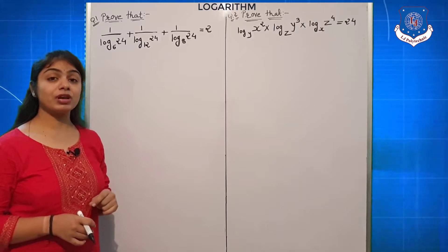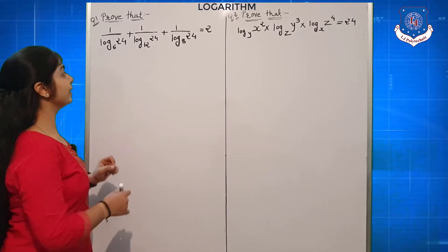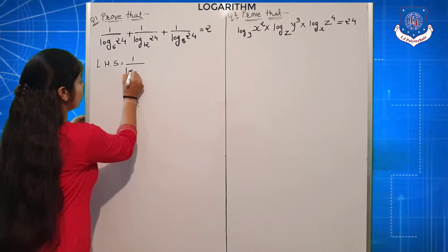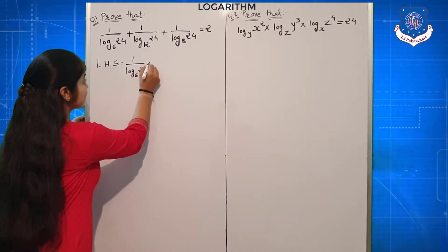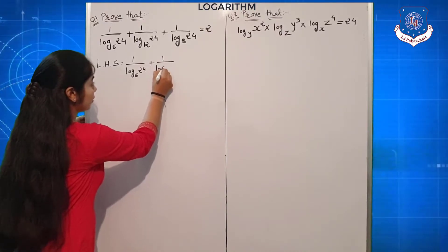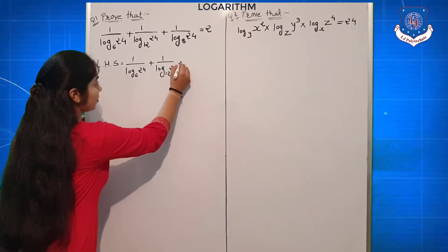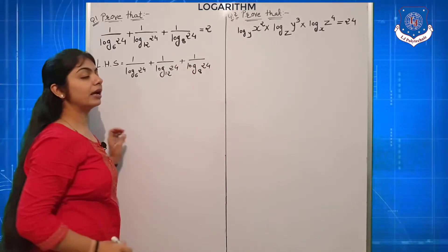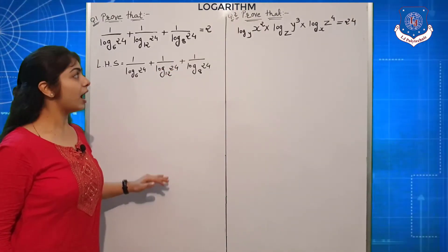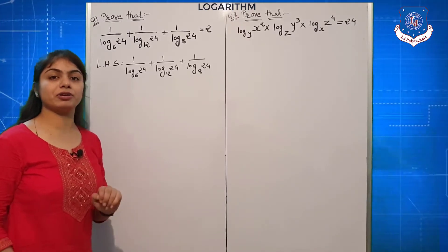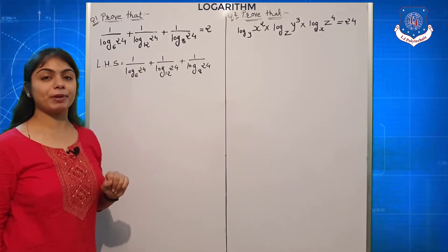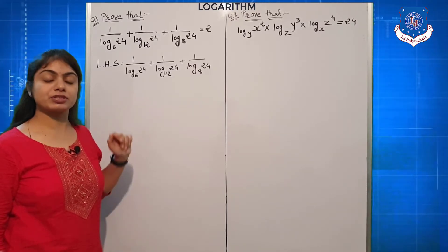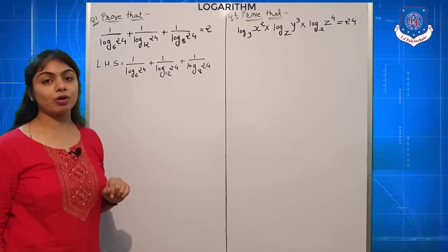In a 'prove that' question, first of all you must compulsorily write LHS side. To simplify this equation, we will use the fourth fundamental log law — that is, change the base. The reason is: log x to the base y is equal to log x upon log y.